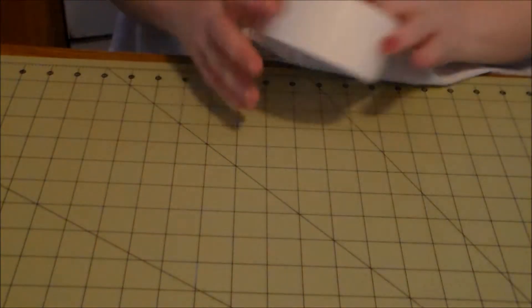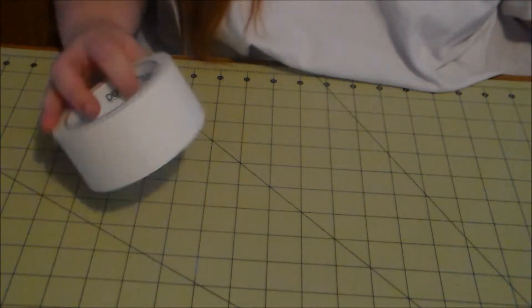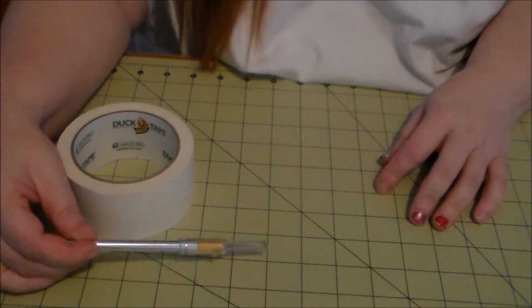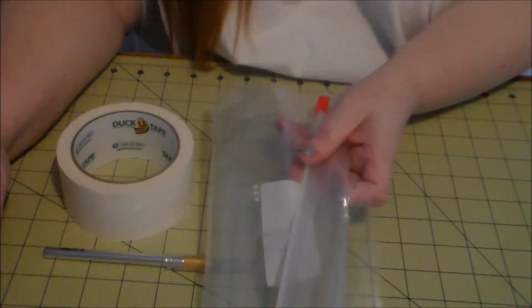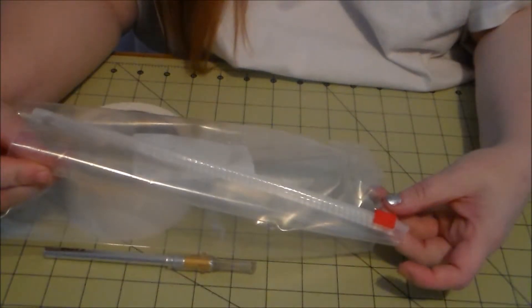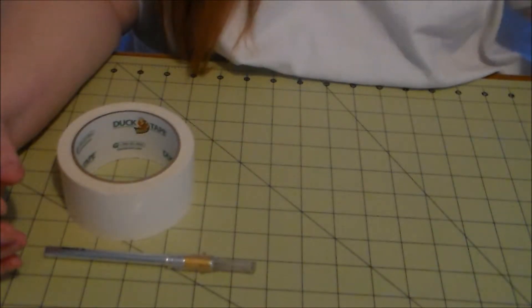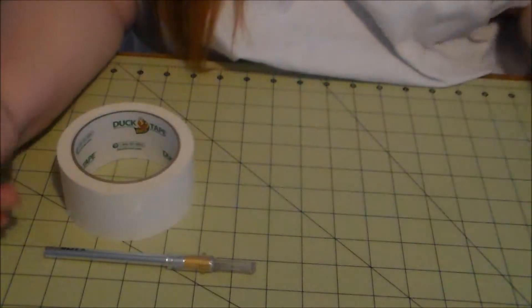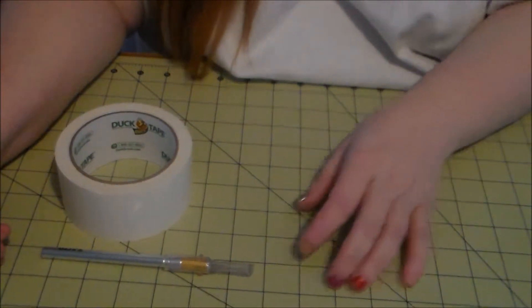So, let's get started. What you're going to need is some duct tape, any color you want. You're going to need an actual cutting knife. You're going to need your ziplock bag. And this is going to be a pretty big one because I'm going to make it bigger than the last one. And you're going to need a ruler. And this is just to clean up your edges.